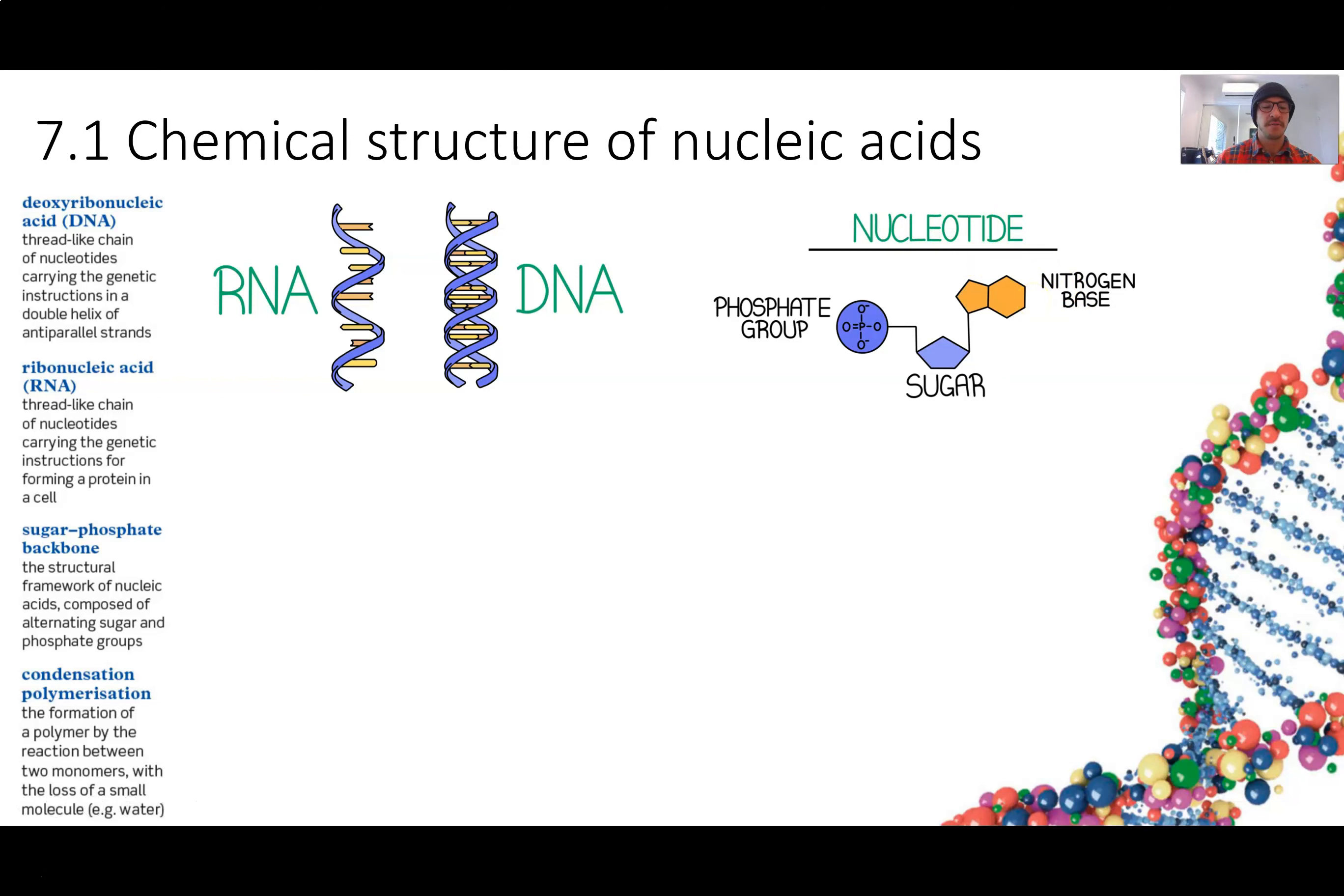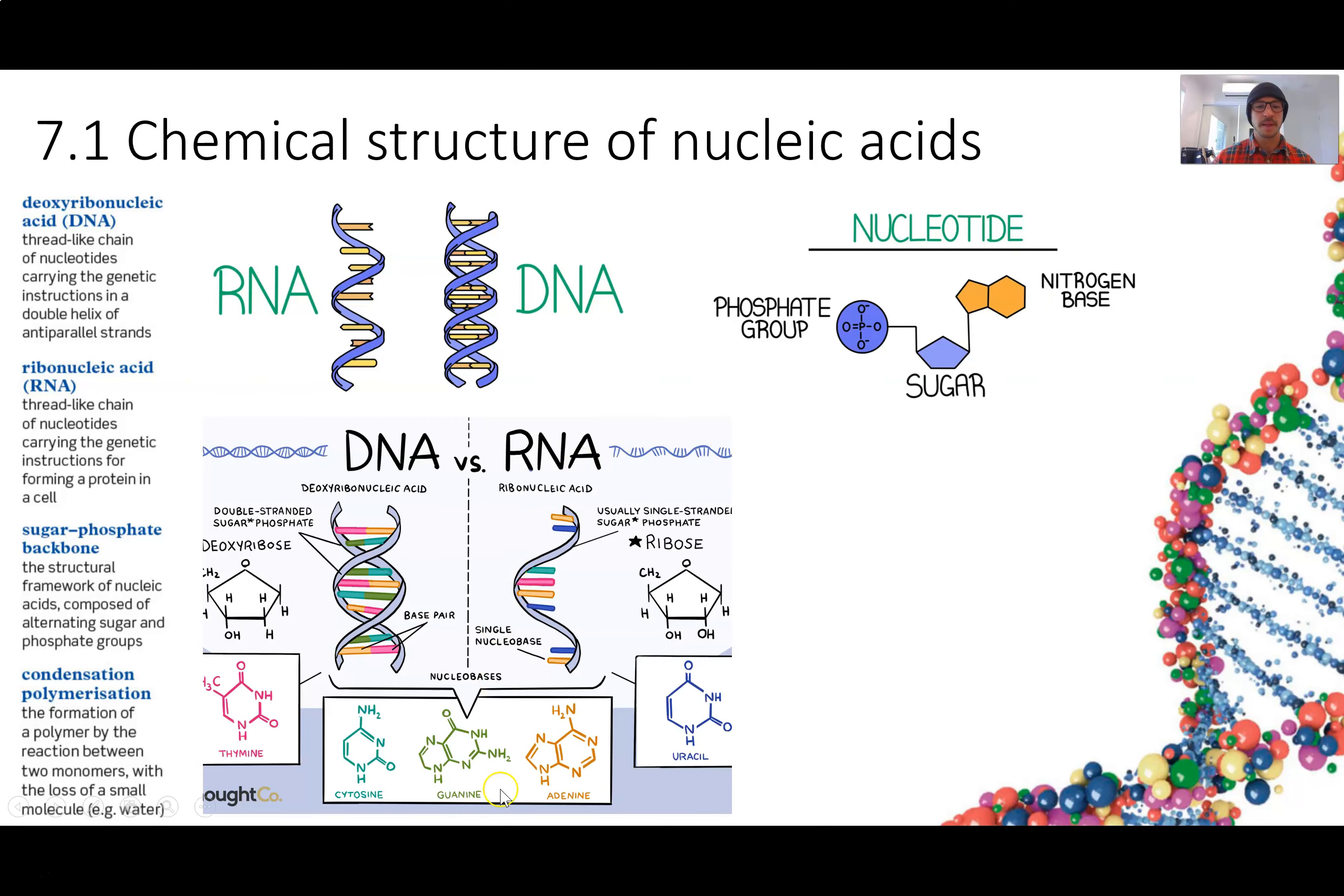In DNA, we have four different bases. They are adenine, guanine, cytosine and thymine. But in RNA, instead of thymine, it is replaced by uracil, which is very similar in structure.